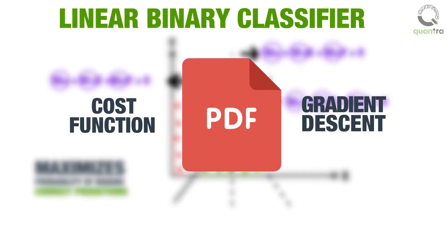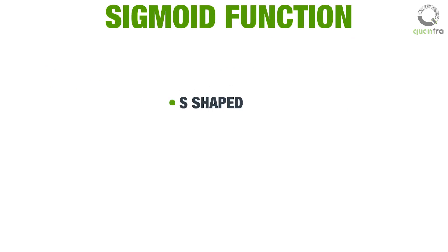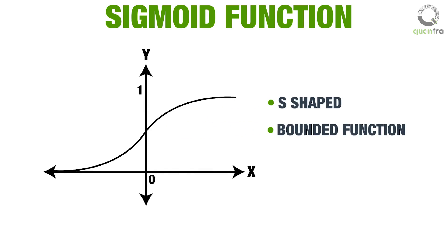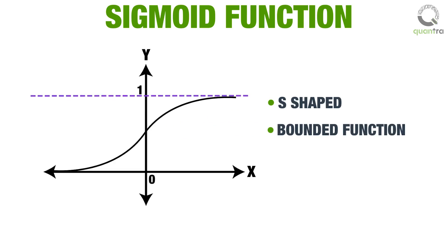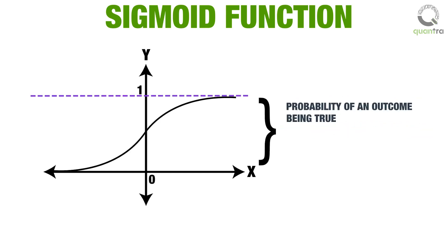These concepts will be covered in the reading material in the next unit. Another mathematical function widely used in constructing a binary classifier is the sigmoid function. The sigmoid function is an S-shaped and bounded function, as shown in the graph. The sigmoid function maps the entire real axis into a bounded space, that is, between 0 and 1. This is very useful in a binary classification problem, as we are interested in the probability of an outcome being true. Hence, a 0 to 1 boundary on the output of the sigmoid function serves this purpose well.